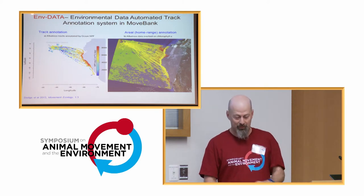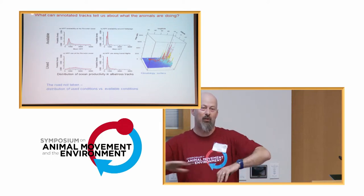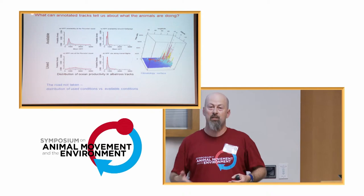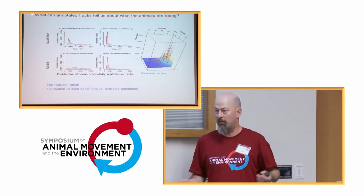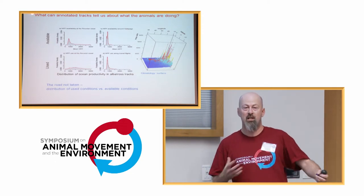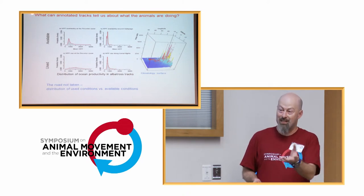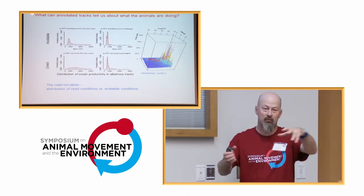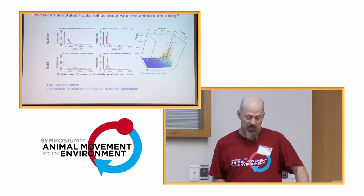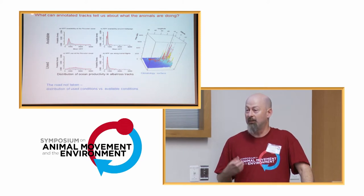Now we have annotated tracks - this amazing 4D or really 5D data block: horizontal, vertical, time, and an additional dimension of up to 4,000 different environmental variables. It's not trivial what to do with this kind of data. People are used to looking at the movement itself - inferring from the way the animal turns or the area visited - but not from really merging in 5D where the animal is, when it is, and what's happening there.